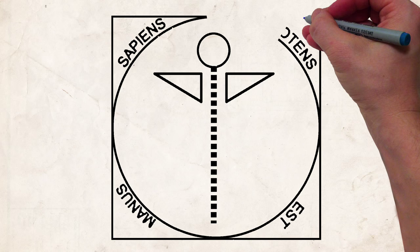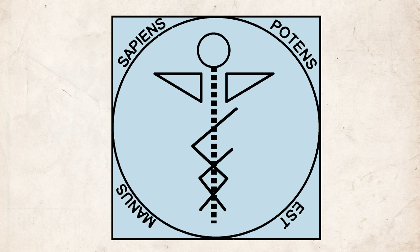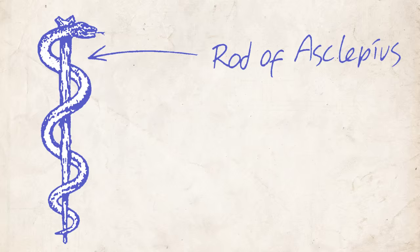Logo of the fascial manipulation is an image of spine, shoulder blades and the head. Initials of Luigi Stecco, L and S, are rotated around the vertebrae. The image is inspired by the rod of Asclepius, from the history of medicine.